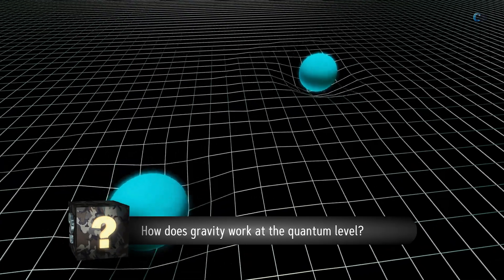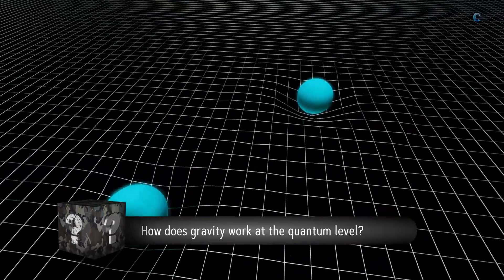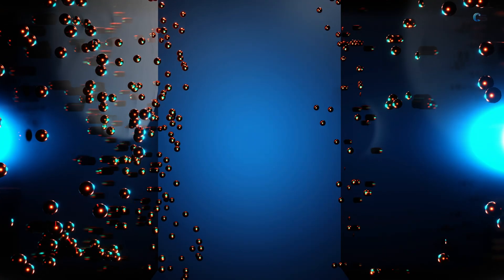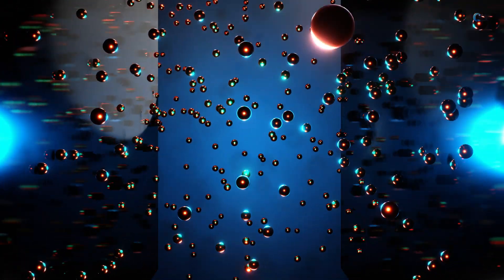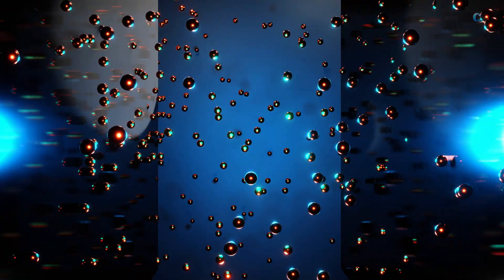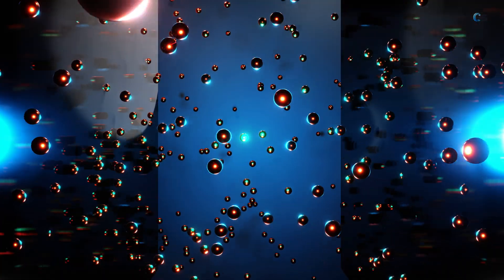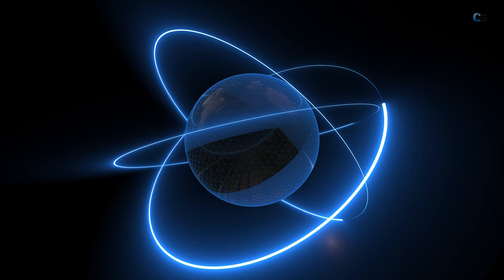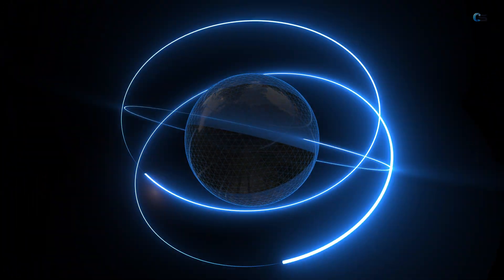Question number 14. How does gravity work at the quantum level? While gravity is well understood on large scales, reconciling it with quantum mechanics remains a challenge. The search for a quantum theory of gravity, often referred to as quantum gravity, is ongoing. Gravity, as described by Sir Isaac Newton's law of universal gravitation, is well understood in the macroscopic world. It states that every mass attracts every other mass with a force proportional to the product of their masses and inversely proportional to the square of the distance between them. However, when we dive into the microscopic world of quantum mechanics, things become more complex.